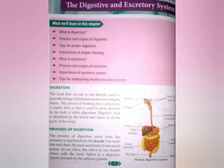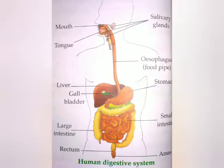From the mouth, the food goes into the stomach through the food pipe, also called the esophagus. The stomach is a sac-like organ and contains digestive juices. Those digestive juices help to break down the protein present in the food into a simpler form.